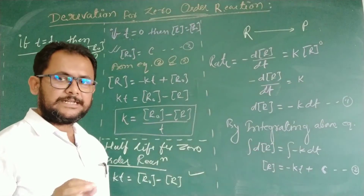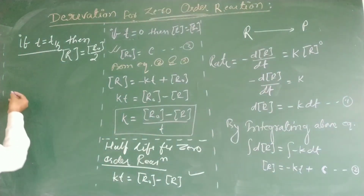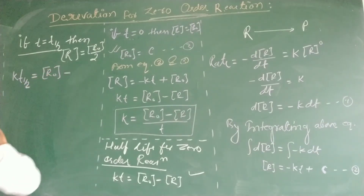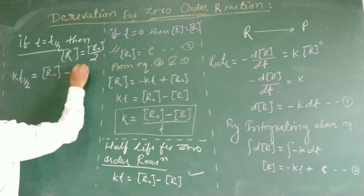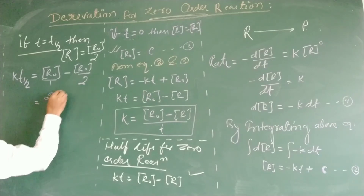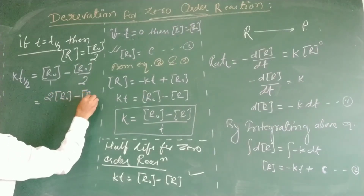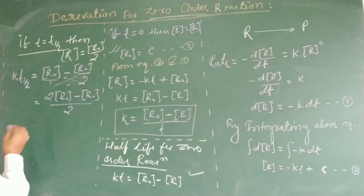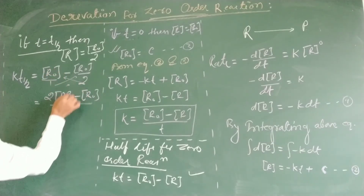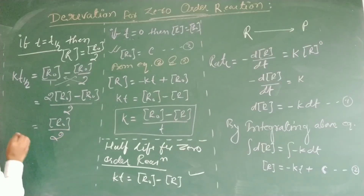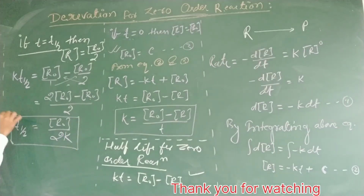Since half the reaction is already complete, we put this condition into the equation. So T-half equals R-naught minus R-naught upon 2, divided by k. Using the LCM concept and cross-multiplying, two times R-naught minus R-naught gives R-naught upon 2. So the half-life, T one-half, equals R-naught upon 2k.